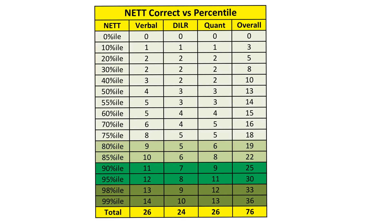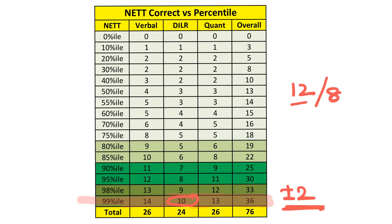How much score do I need in the CAT exam to get the ideal percentile? For 99 percentile, it will be around 14 questions correct in Verbal, 10 questions correct in DILR, and 13 questions correct in Quant — overall 36 questions correct. This is plus or minus 2 questions. For example, for DILR, I'm expecting 10 correct for 99 percentile — it can go as high as 12 or as low as 8.